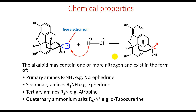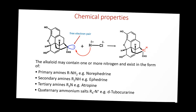Alkaloids may contain one or more nitrogen atoms and exist in the form of primary amines (e.g., norephedrine), secondary amines (e.g., ephedrine), tertiary amines (e.g., atropine), or quaternary ammonium salts (e.g., tubocurarine).